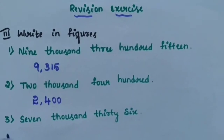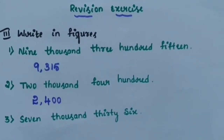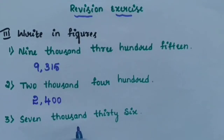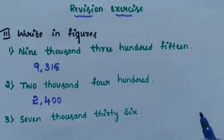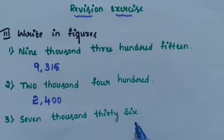Sub-question 3: 7036. 7 is in the 1000s place, 0 is in the 100s place, 30 is in the 10s place, and 6 is in the units place.